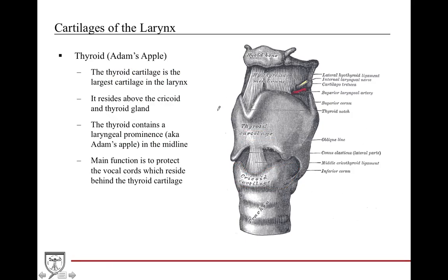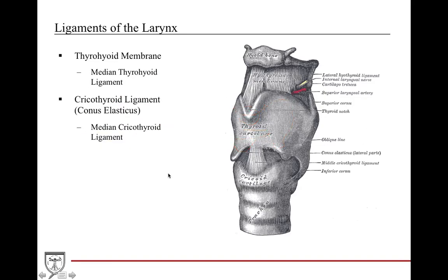The thyroid cartilage is everyone's favorite — the Adam's apple. You can see the thyroid cartilage here, with the laryngeal prominence being the Adam's apple. It sits right above the cricoid cartilage and is intimate with the thyroid gland. Its main function is protecting the vocal cords. When discussing cartilages, it's also important to mention the median thyrohyoid ligament, which attaches the thyroid to the hyoid, and the median cricothyroid ligament, which attaches the cricoid to the thyroid — both serving as continuation of fascial attachment points.